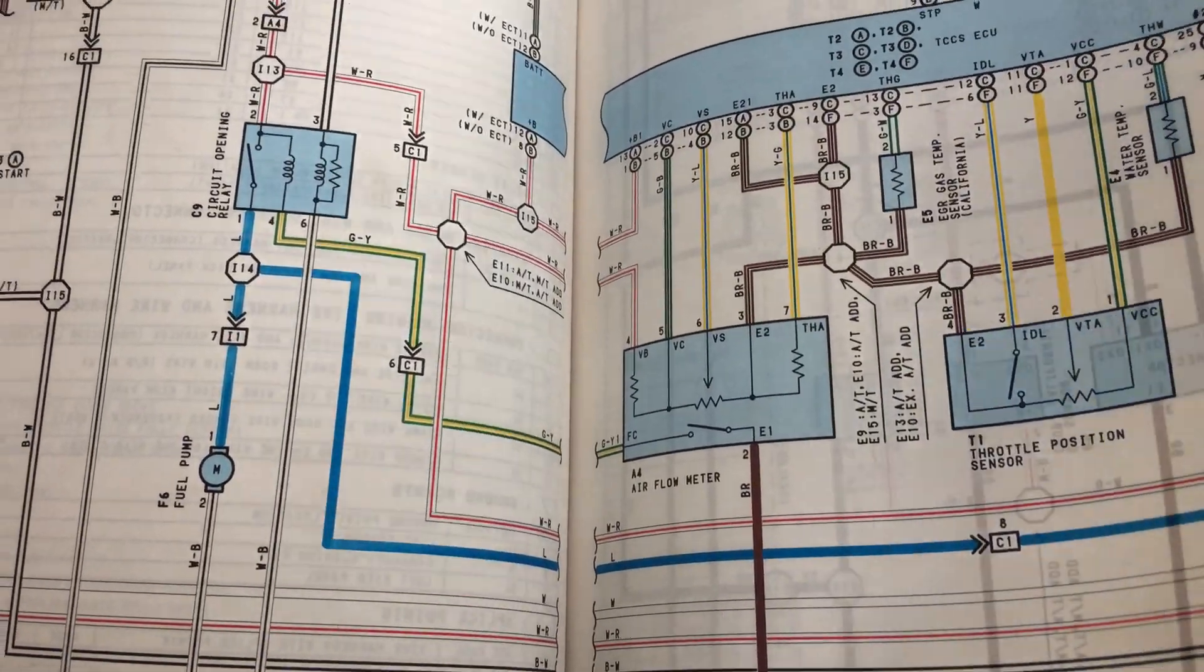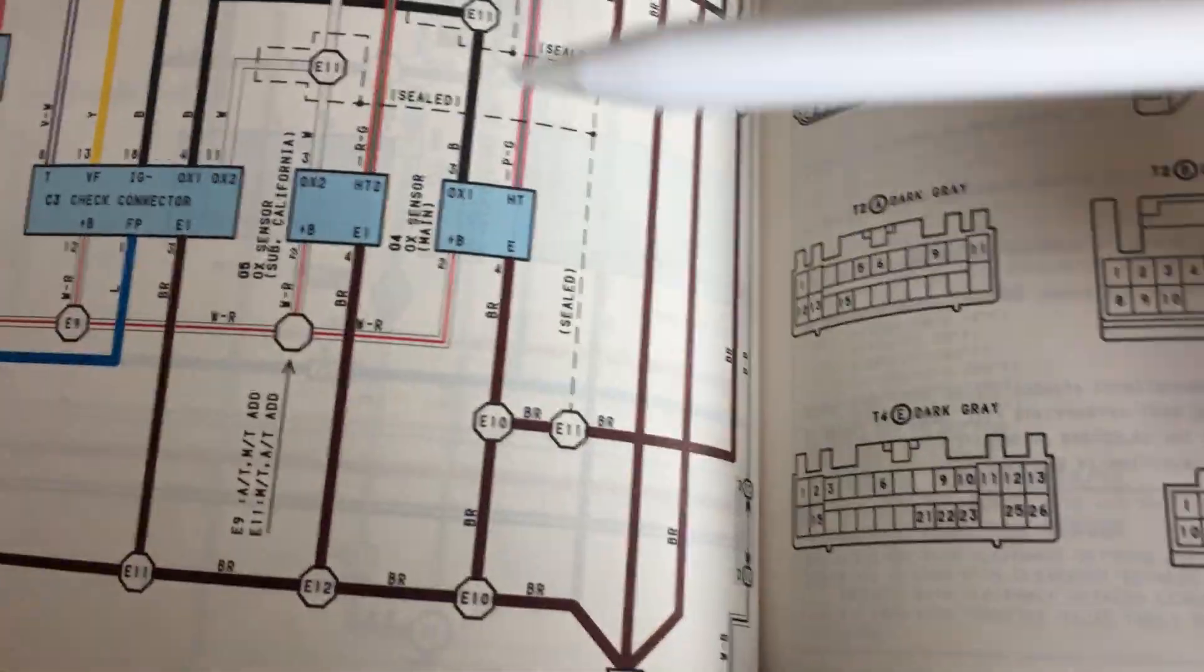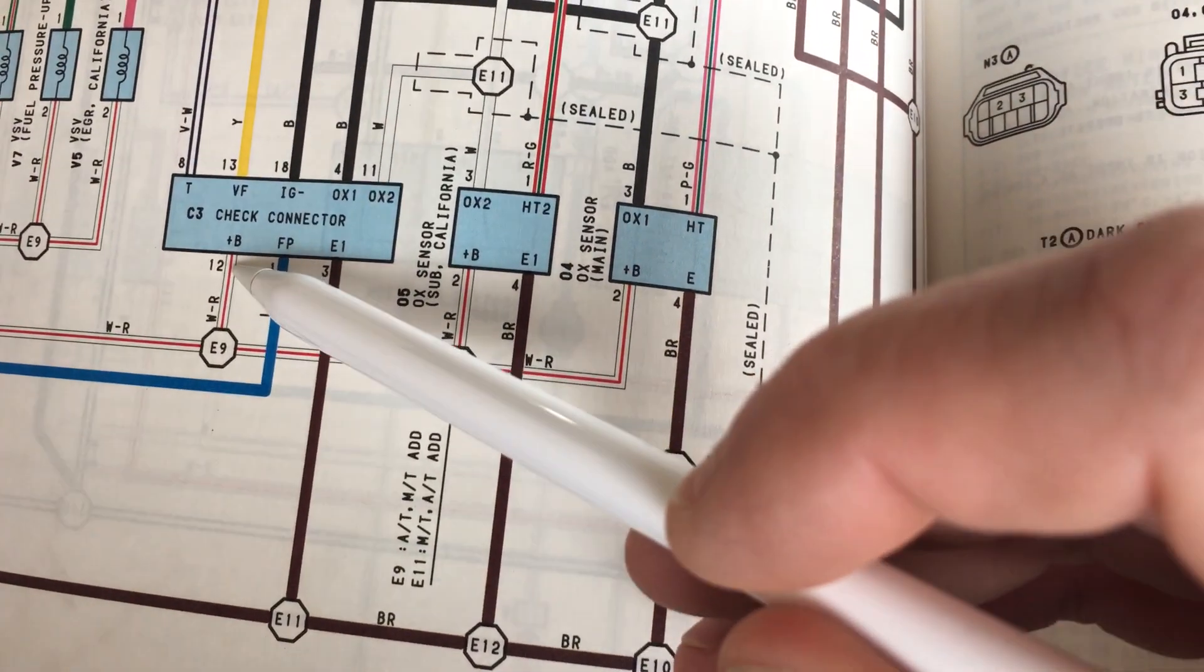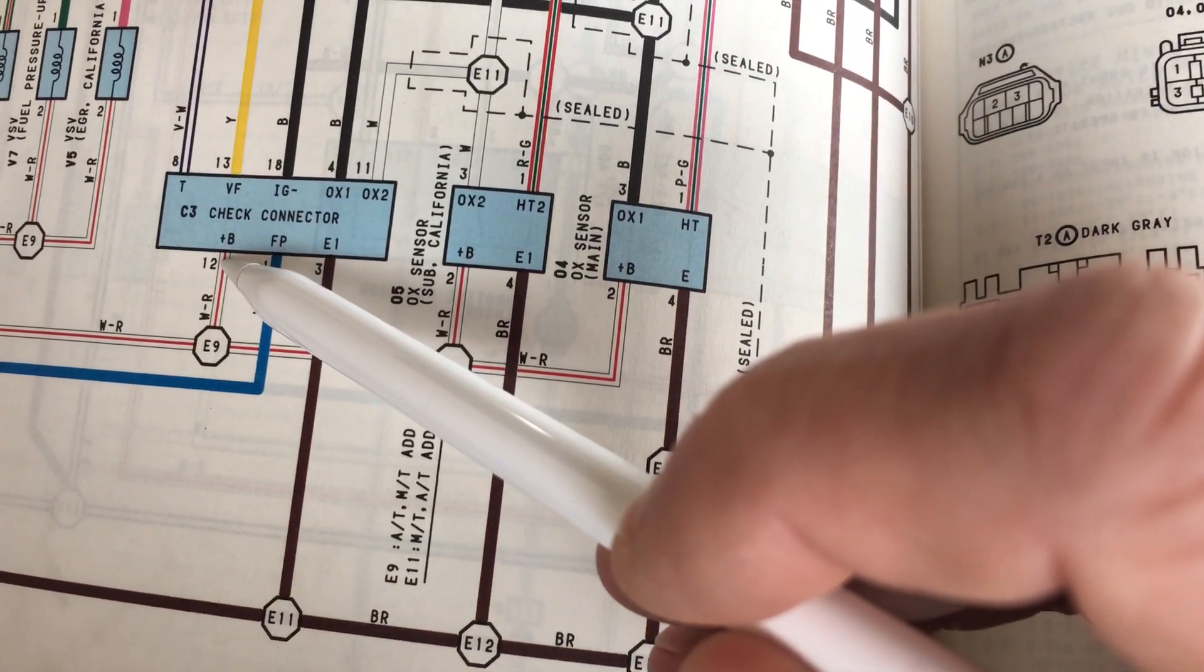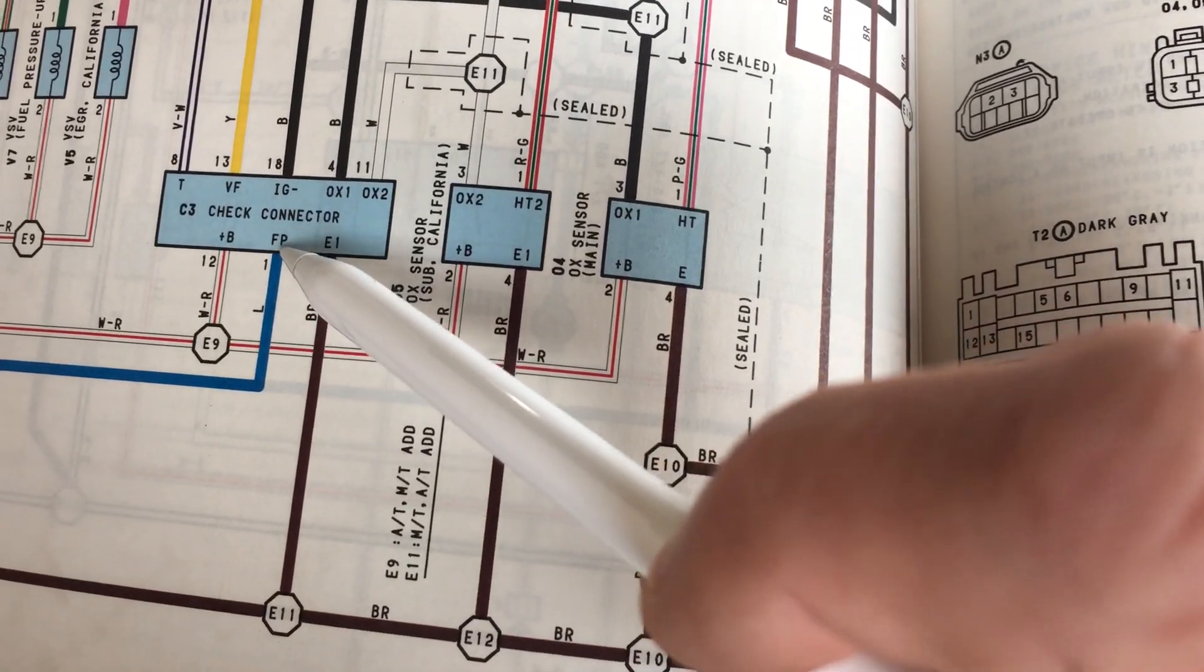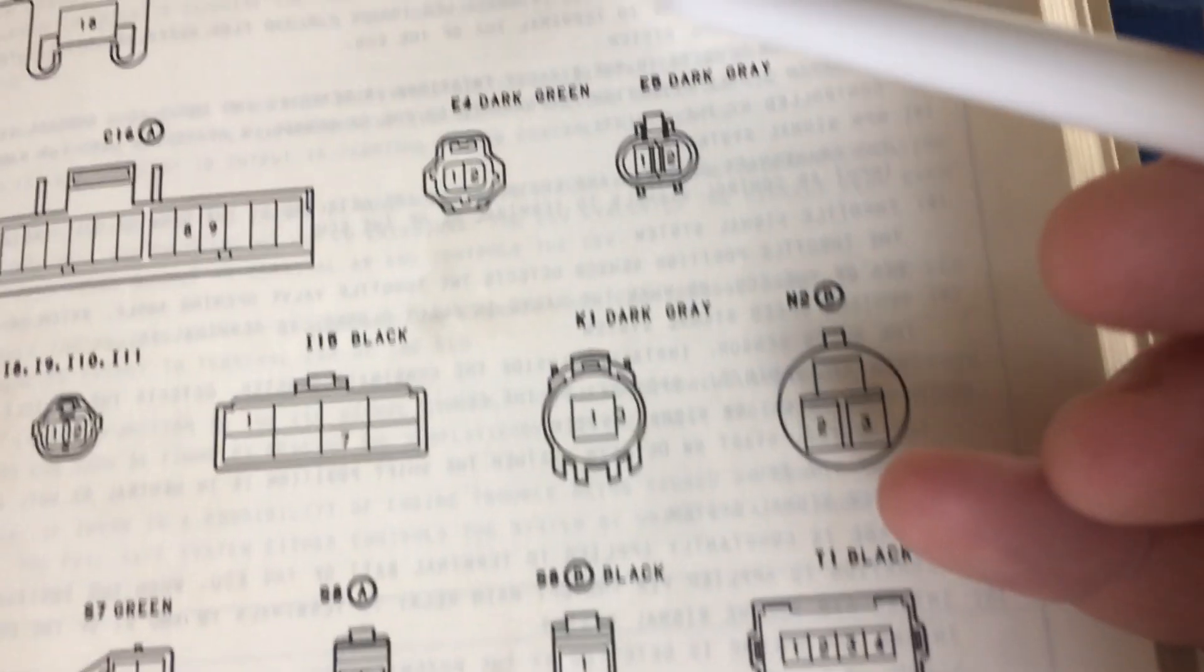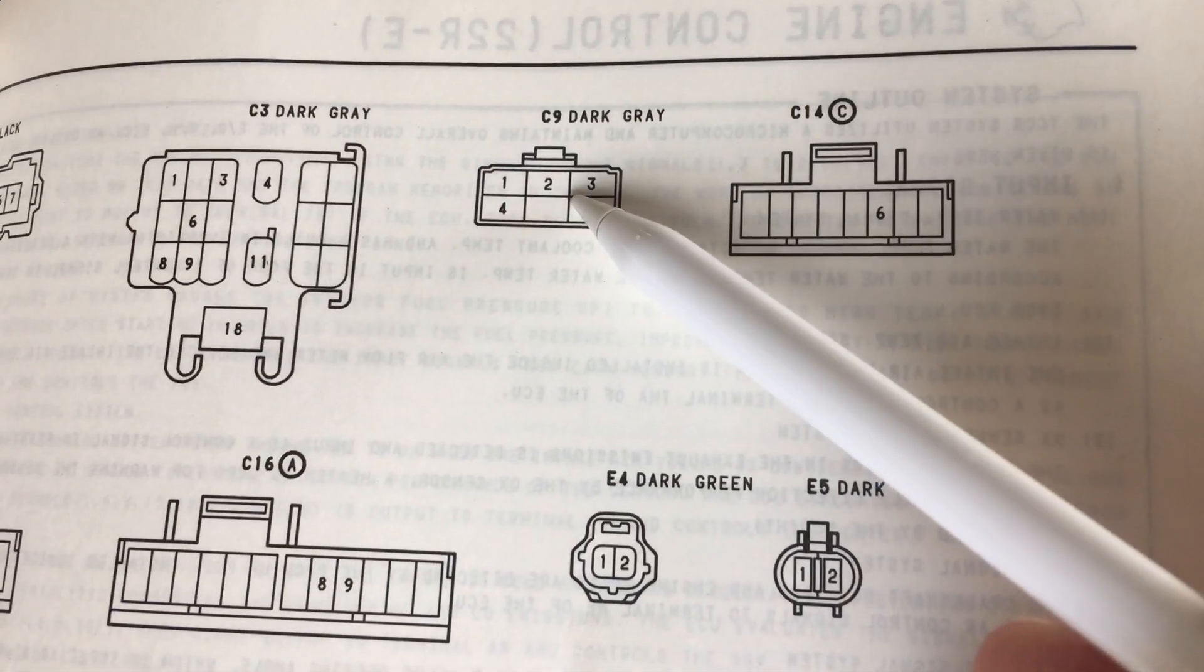You'll see that what you're doing is turning on that relay manually by jumpering B+ and FP. That illustrates it. And then here's the dark gray connector.